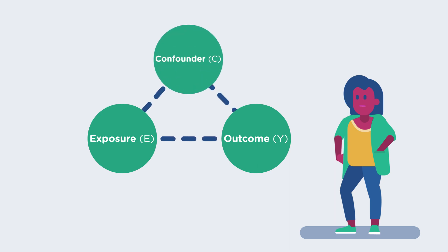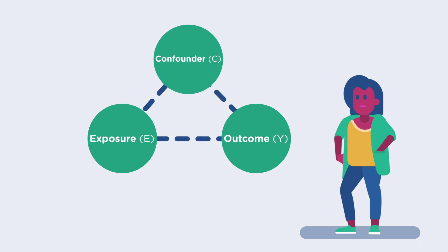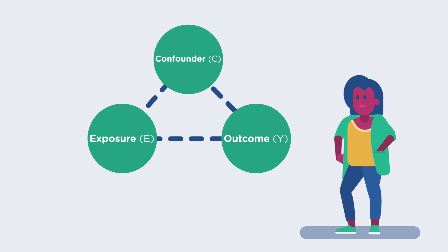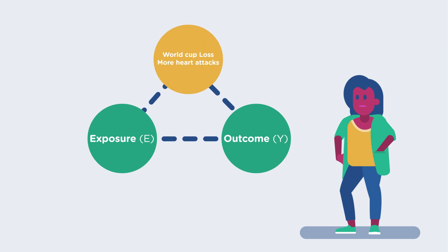In practice, this means that confounding always needs to be considered in a study that makes a claim about a causal effect. We need to be sure that we are indeed looking at an association that represents the real causal effect and not one that is confounded by other factors.